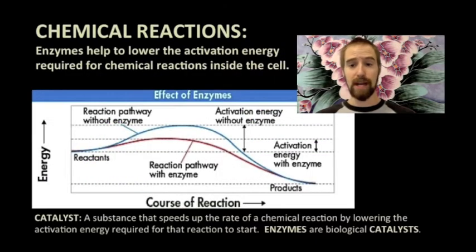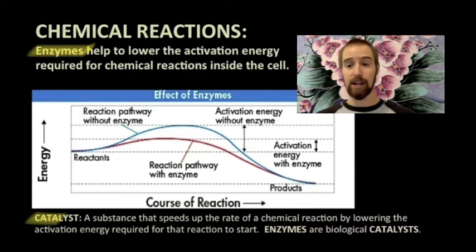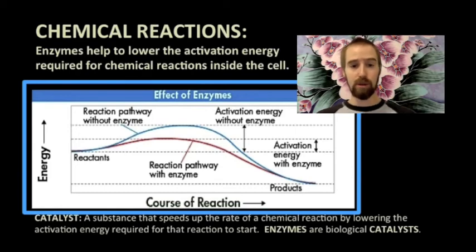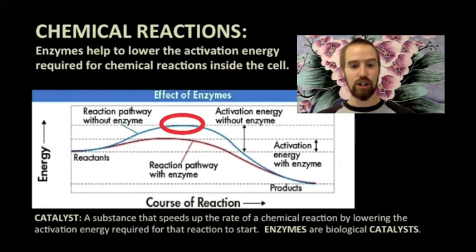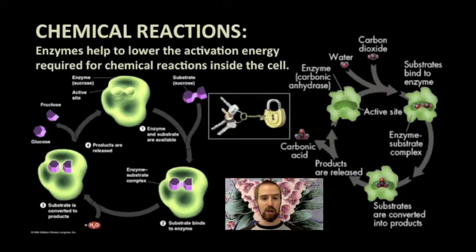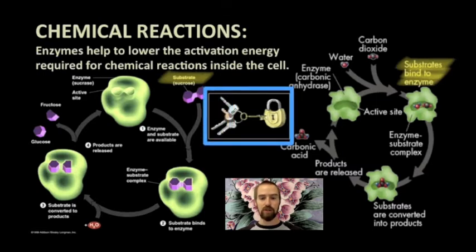All chemical reactions require some input of energy in order to get started. Inside of our cells, protein molecules called enzymes help us to regulate the chemical reactions that support life. Enzymes act as biological catalysts, speeding up reactions by lowering the activation energy required for that reaction to get started. Enzymes work by providing a location for specific reactions to occur. The reactants of an enzyme-catalyzed reaction are called substrates, and these substrates bind to the active site of an enzyme molecule with a complementary shape. These two pieces fit together like a lock and key, and this is why most enzymes only catalyze one particular chemical reaction.